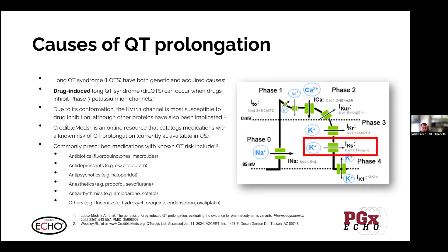When we look at the list of drugs, there are many familiar faces: antibiotics like fluoroquinolones and macrolides; antidepressants like citalopram and escitalopram; haloperidol and other antipsychotics; commonly used anesthetics like propofol and inhaled anesthetics; and antiarrhythmics like amiodarone and sotalol, which can both treat and cause arrhythmias. Other medications include fluconazole, hydroxychloroquine — a big concern during COVID — and oxaliplatin among chemotherapy agents.